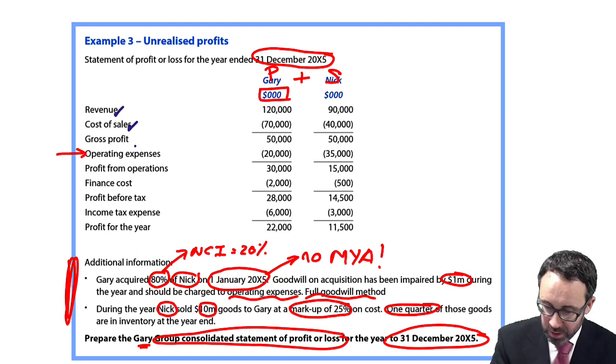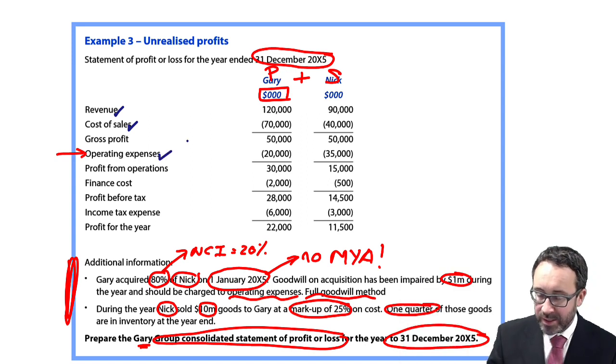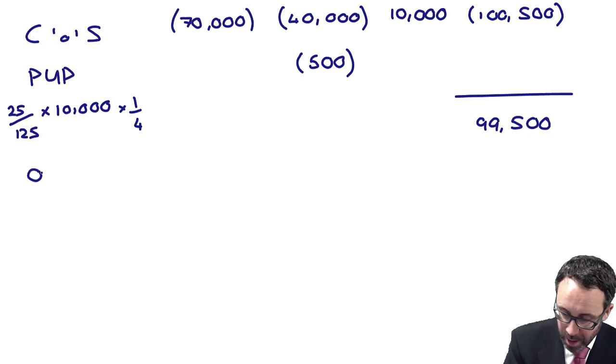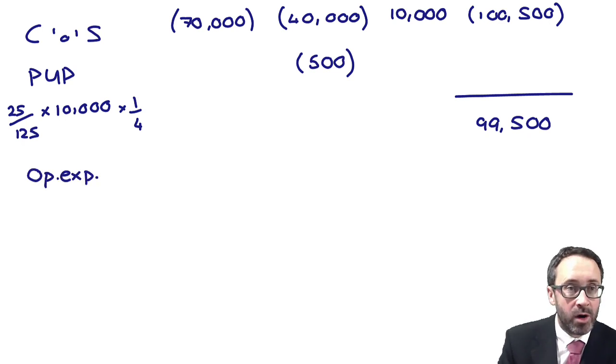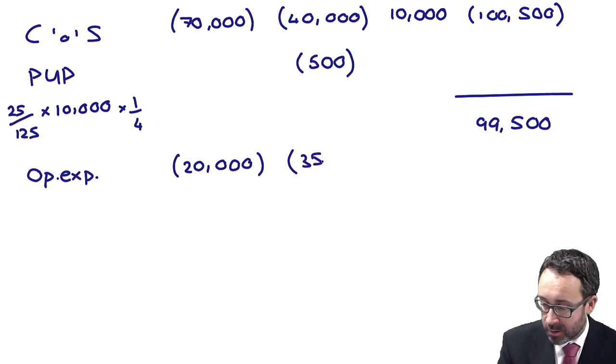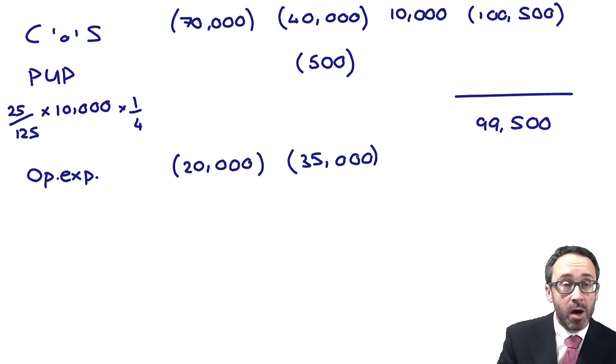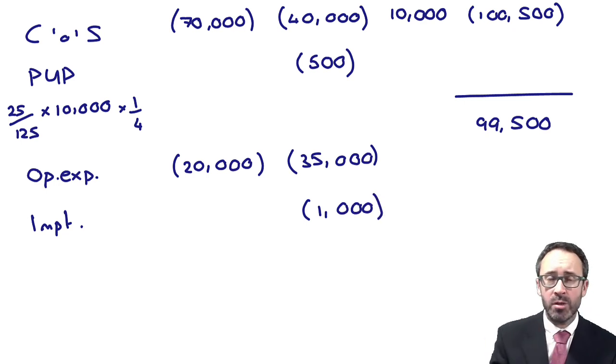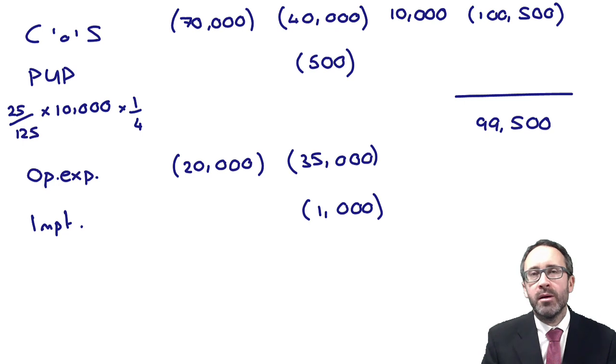We've dealt with revenue, we've dealt with cost of sales. Next one is the operating expenses - operating expenses 20,000 and 35,000. So we've got 20,000 and 35,000. Just be very careful now because we've then got the impairment. The impairment was one million, so that's one thousand thousand. The impairment reduces the profit, increases the expenses, and remember it goes in S's column because we're looking at the full goodwill and we need to give the non-controlling interest their share of that impairment when we allocate out the non-controlling interest later in our calculations.